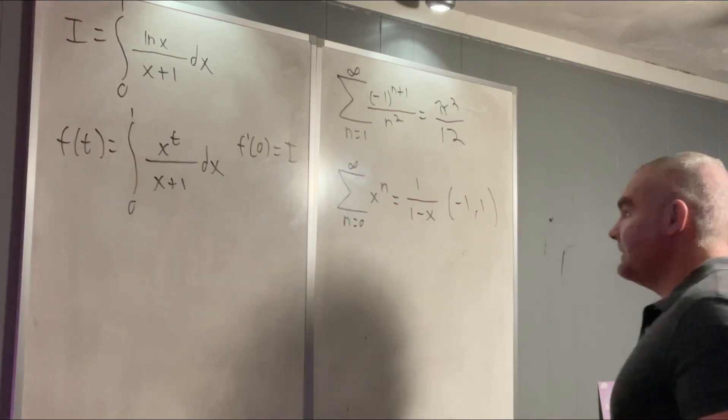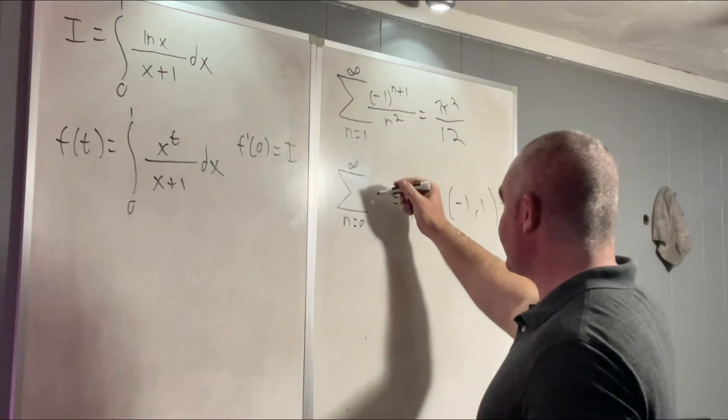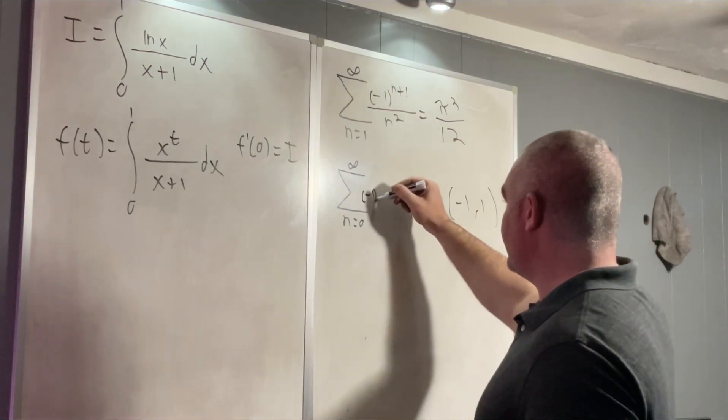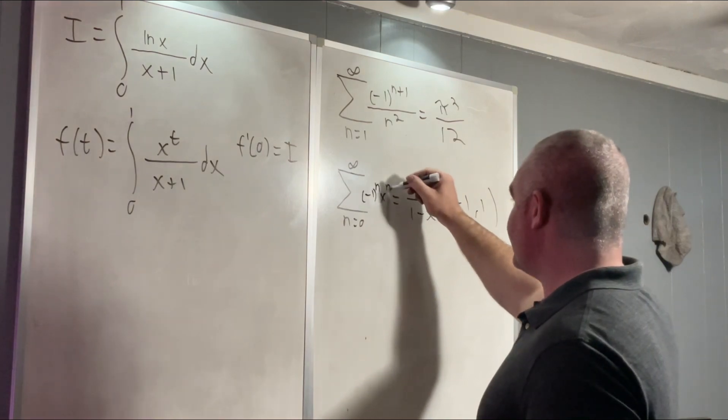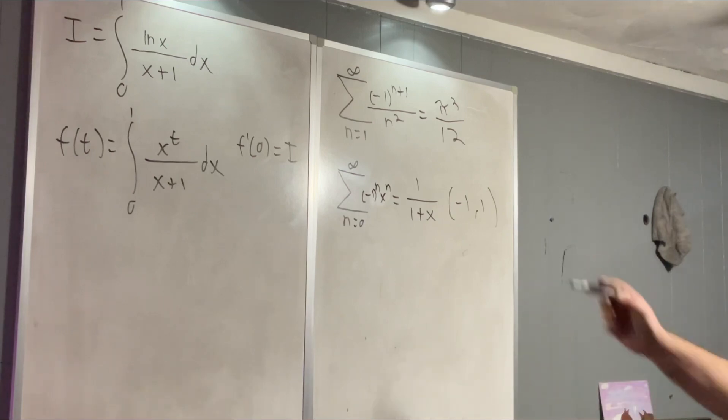That means that this is also true. We just replace x with negative x and we get negative 1 to the n times x to the n, and that's equal to 1 over 1 plus x on negative 1 to 1.